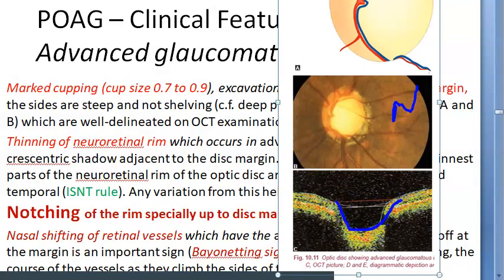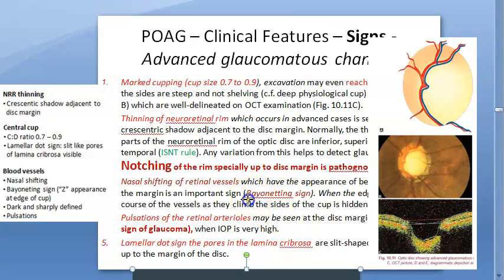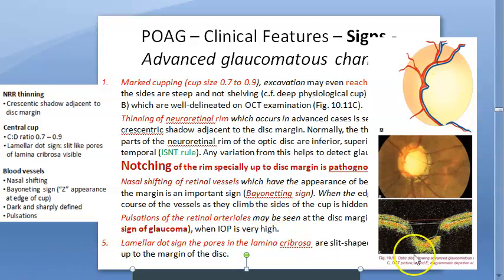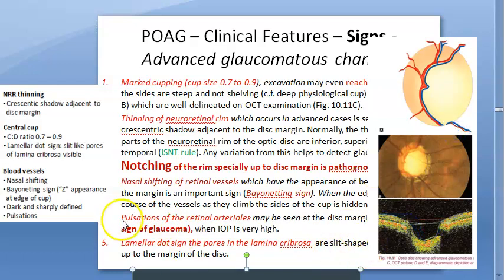Another important sign is the bayonetting sign. The cup has gone very deep, and the vessels appear to break at the cup margin — they seem to descend, then continue at the base, creating an offset appearance like a bayonet knife on a gun. The cup is so deep that vessels are climbing down and back up, creating that split appearance. This is the bayonetting sign.